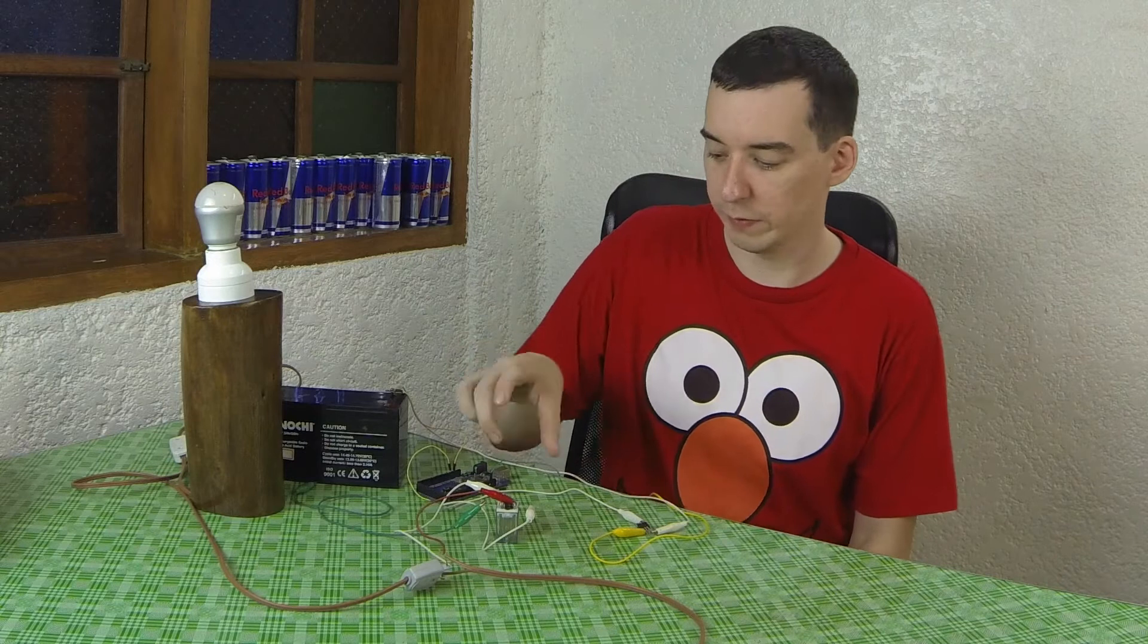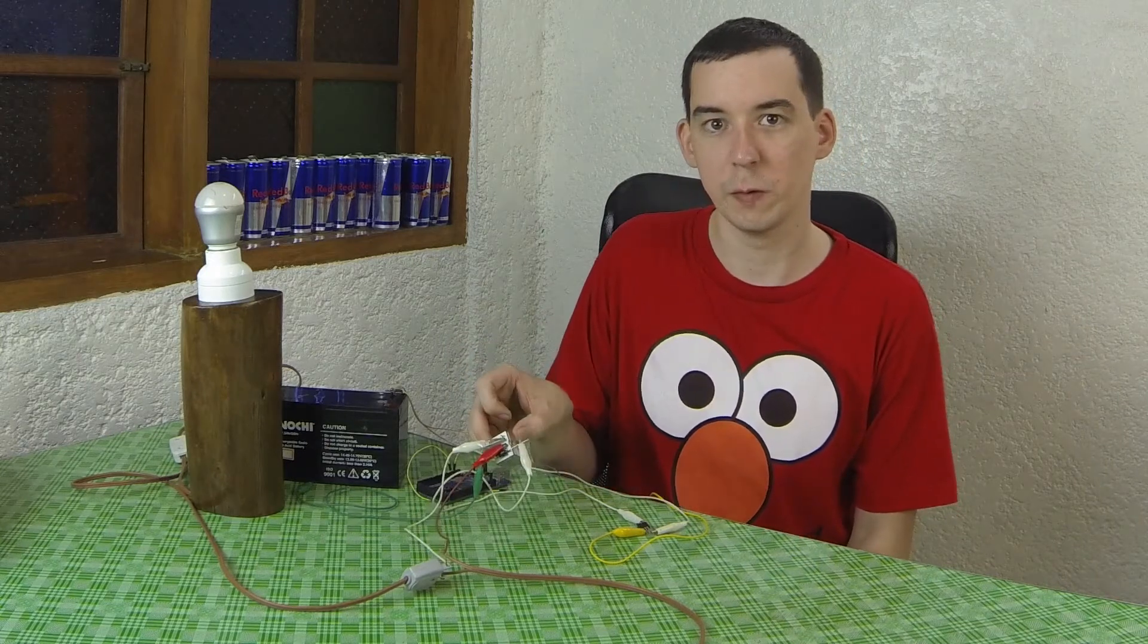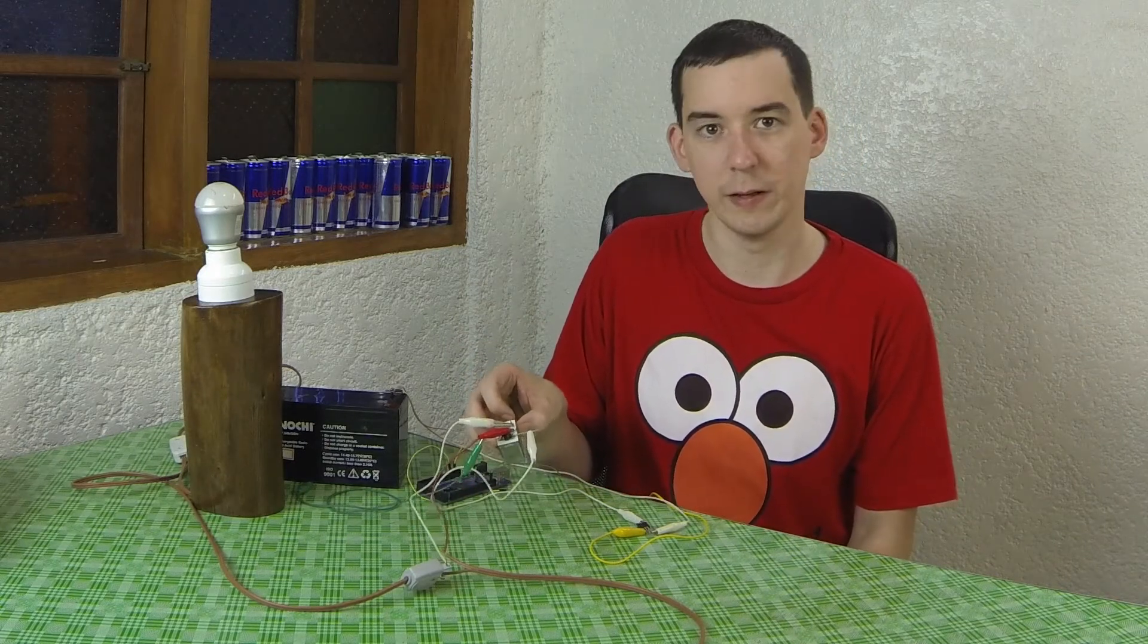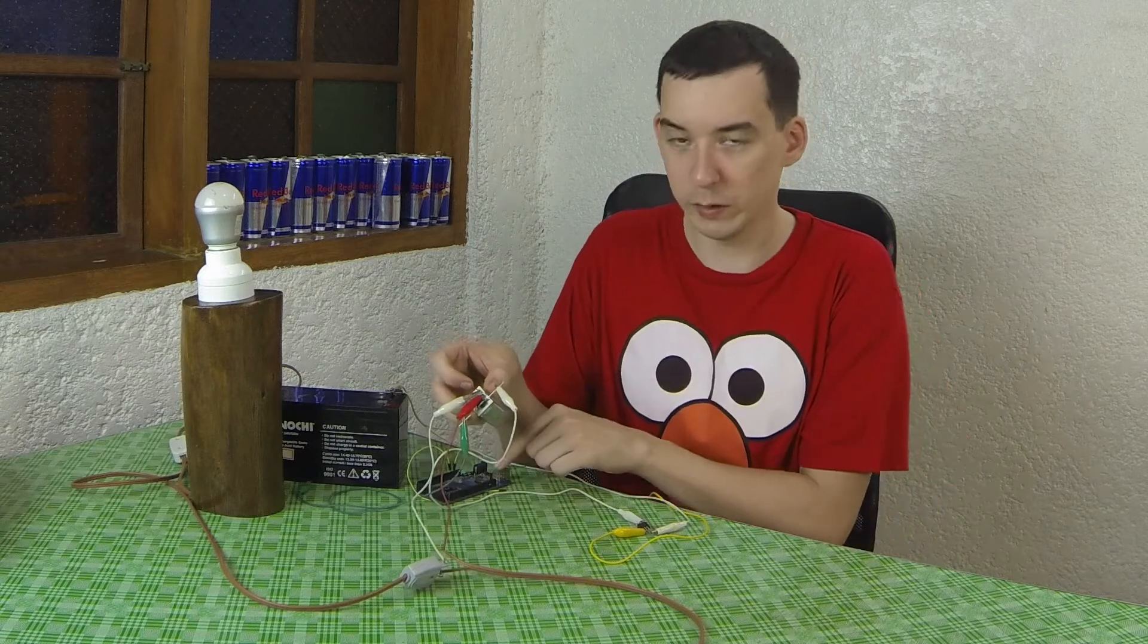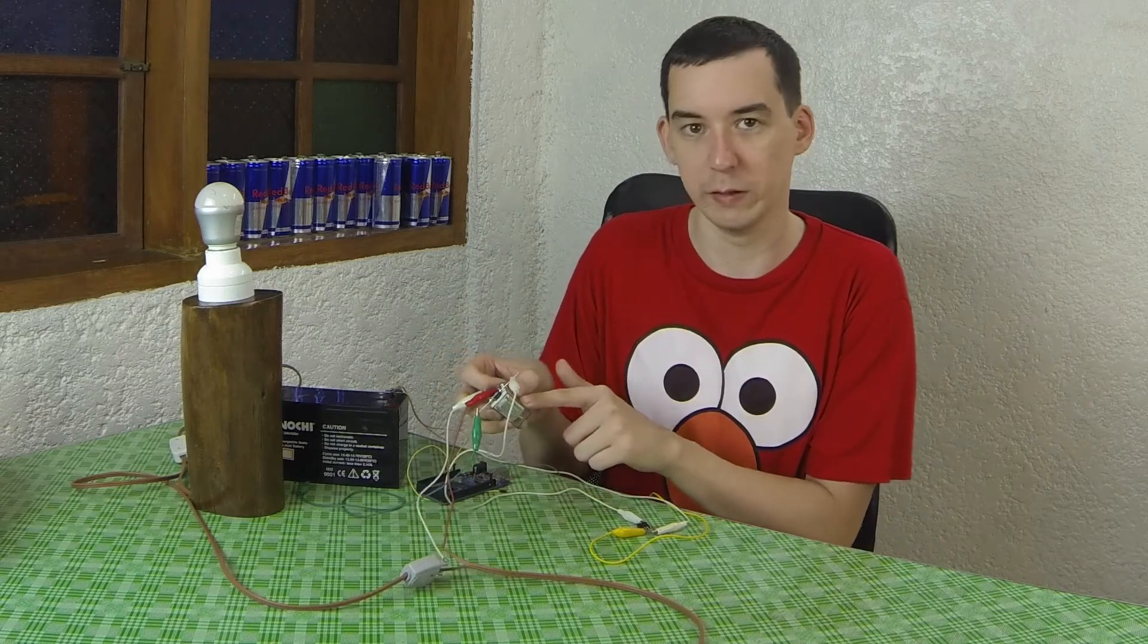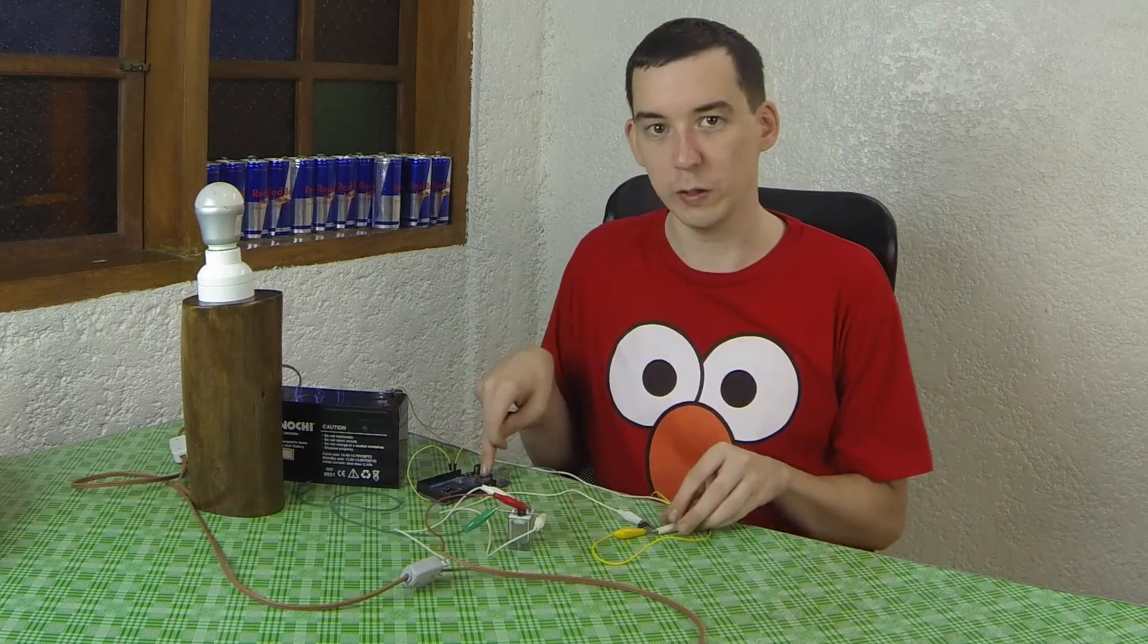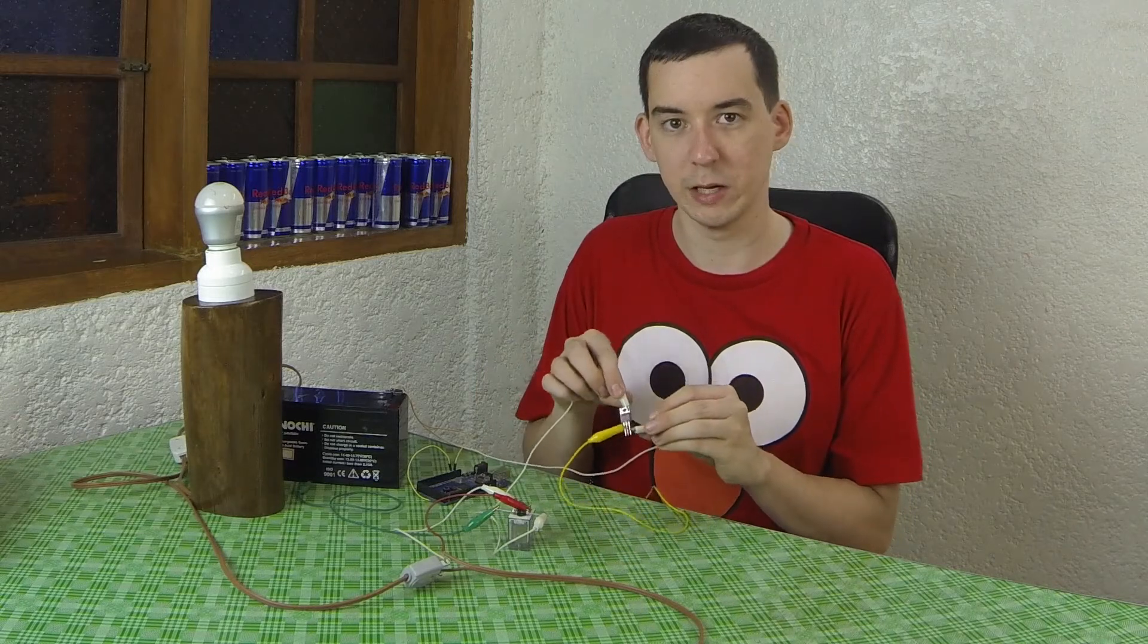Now the Arduino cannot run this relay directly. This is a 12 volt relay and aside from the fact that it's 12 volts, the Arduino could not push out enough power to trigger this relay. So the Arduino is actually using an N-channel MOSFET.